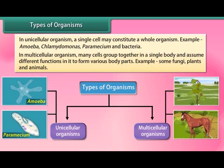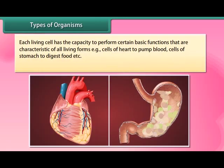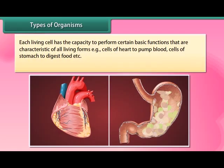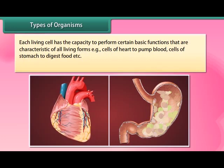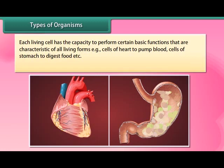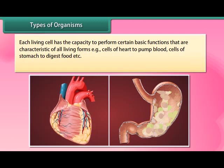In multicellular organisms, many cells group together in a single body and assume different functions to form various body parts. Examples include some fungi, plants, and animals. Each living cell has the capacity to perform certain basic functions — for example, cells of the heart pump blood, and cells of the stomach digest food.